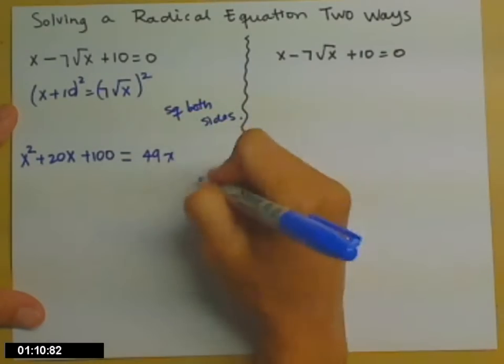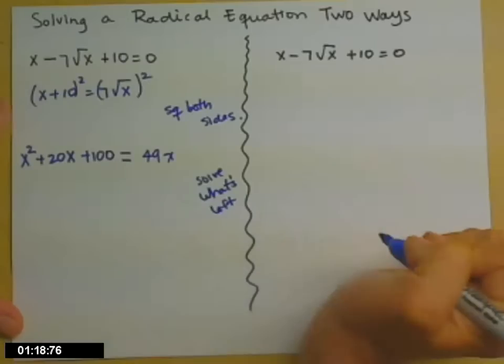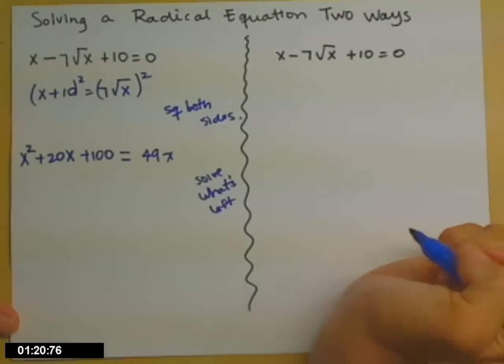So after you square both sides, then we had to solve what's left. So what's left is a quadratic equation because you have an x squared, which means we need a 0, unless we're going to extract a root, and that wouldn't make sense because we just squared both sides, so square rooting at this point doesn't get us anywhere.